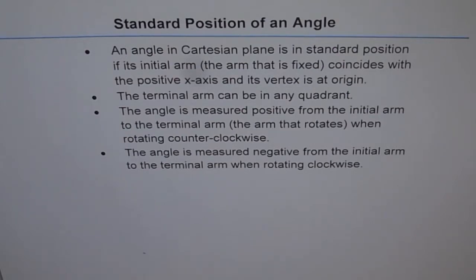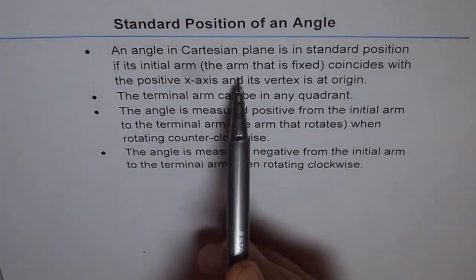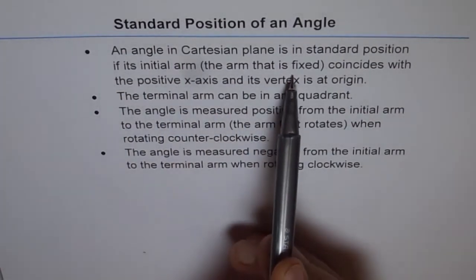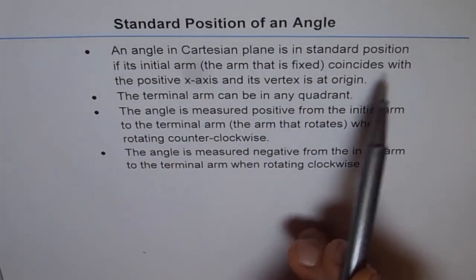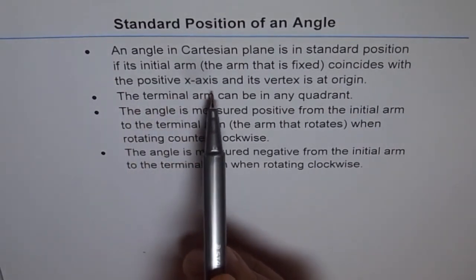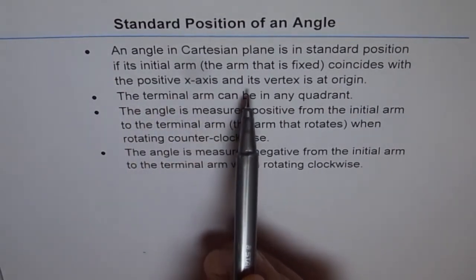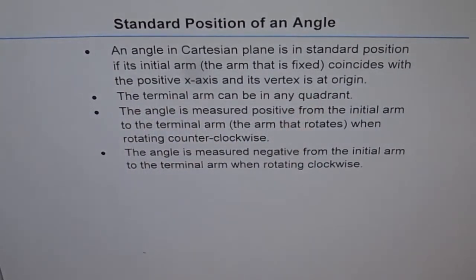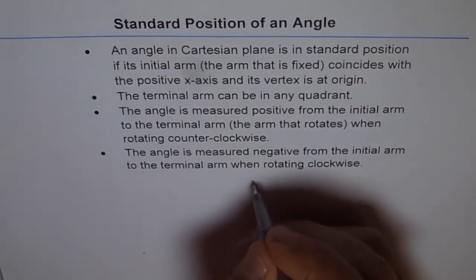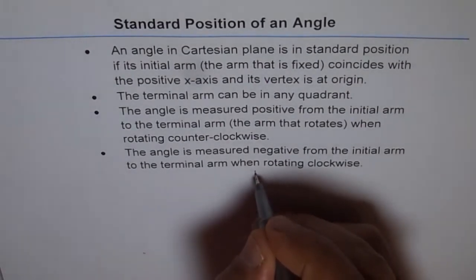An angle in the Cartesian plane is in standard position if its initial arm — the arm that is fixed — coincides with the positive x-axis and its vertex is at the origin. So that is what standard position of an angle is. Let me draw here and then explain.